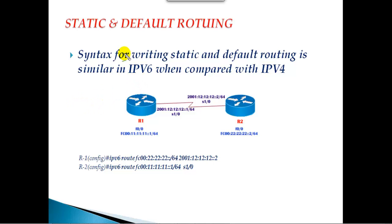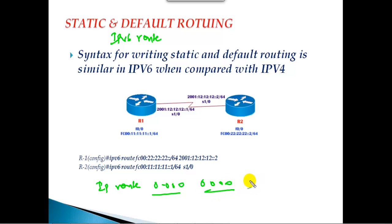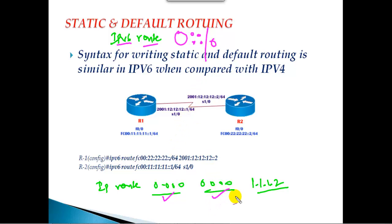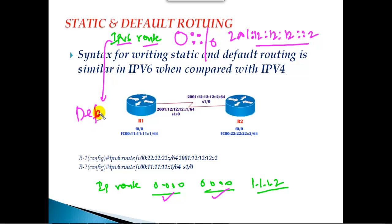To configure a default route in IPv6, we give 'ipv6 route' with destination network ID. In IPv4 we write 'ip route 0.0.0.0 0.0.0.0' followed by a next-hop address. In IPv6, we write 'ipv6 route ::/0' — the double colon represents all zeros, /0 represents the subnet mask — then the next-hop IP address such as 2001:12:12::2. This is how we configure default routing in IPv6.